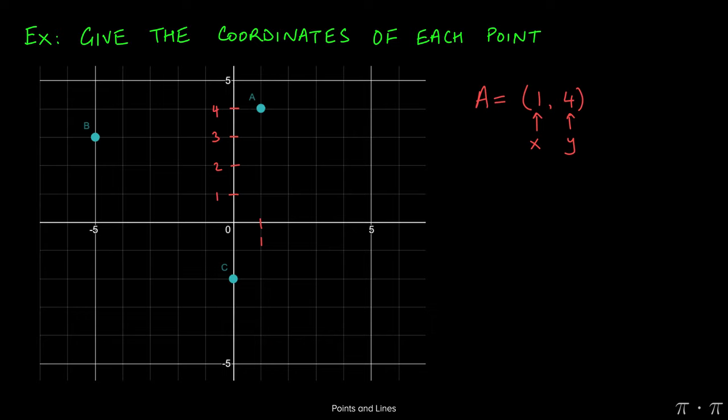For B, we see that we would need to move five units to the left and then three units up. This gives us coordinates for B as negative five comma three, because we went five units to the left and three units up.